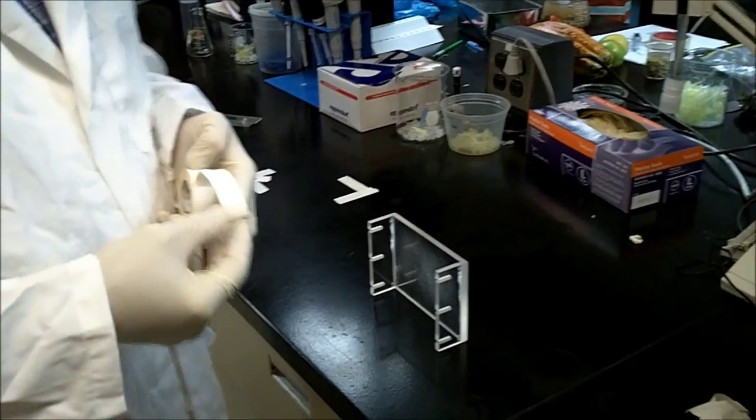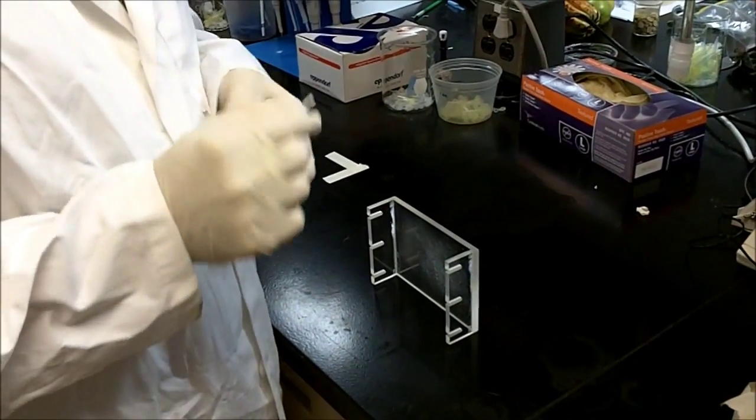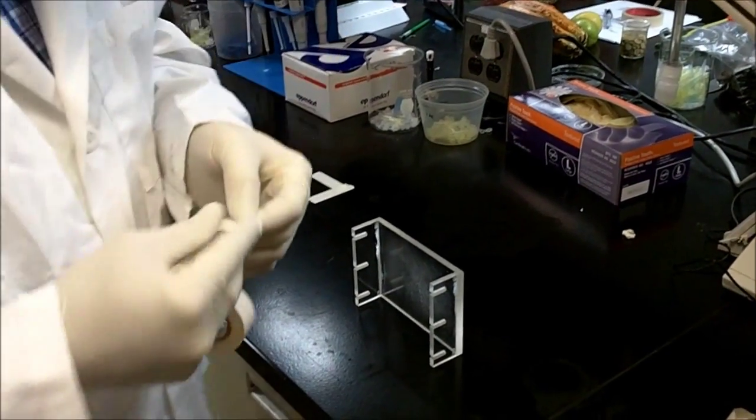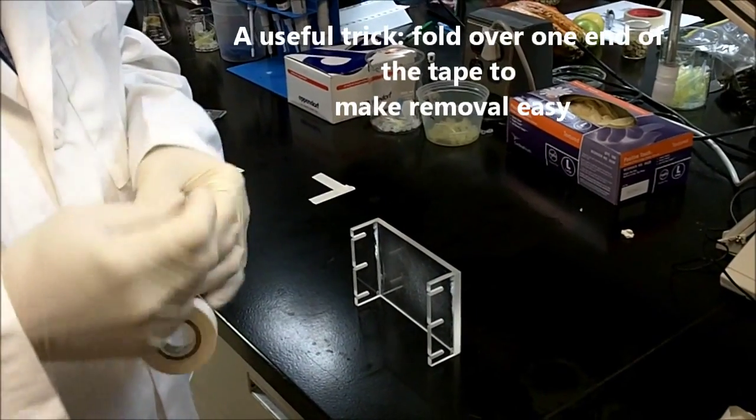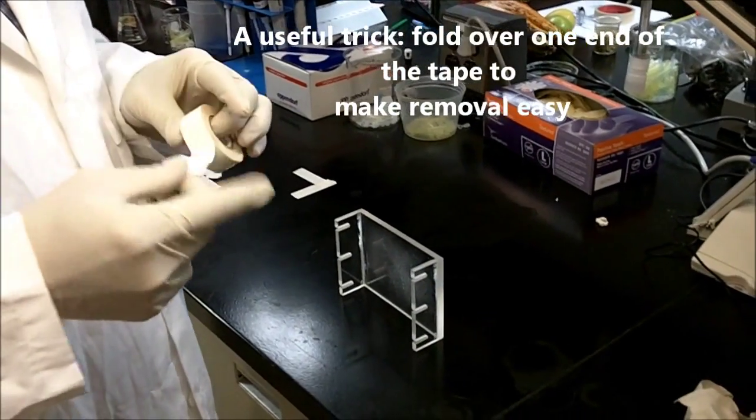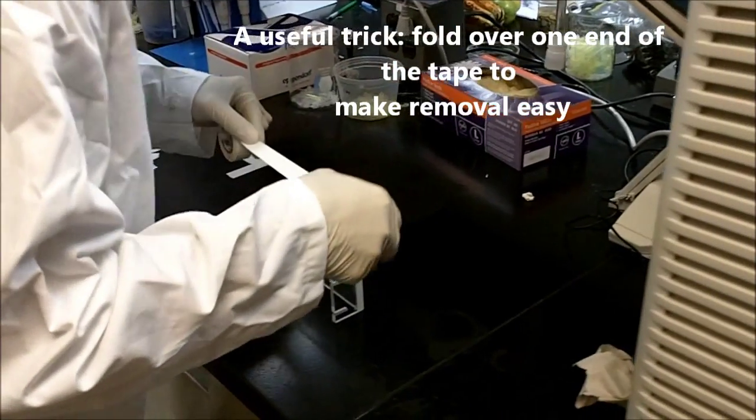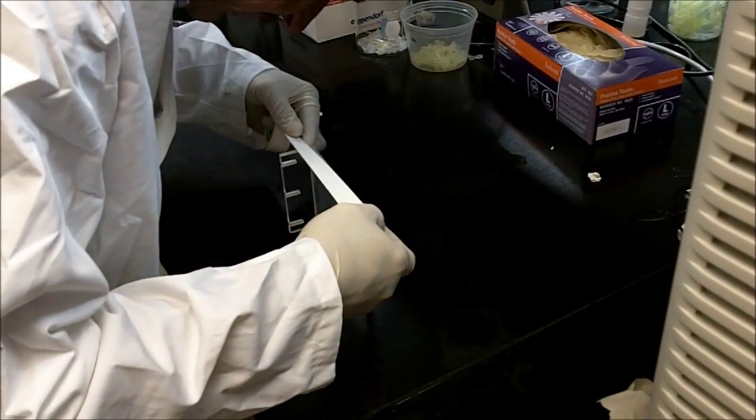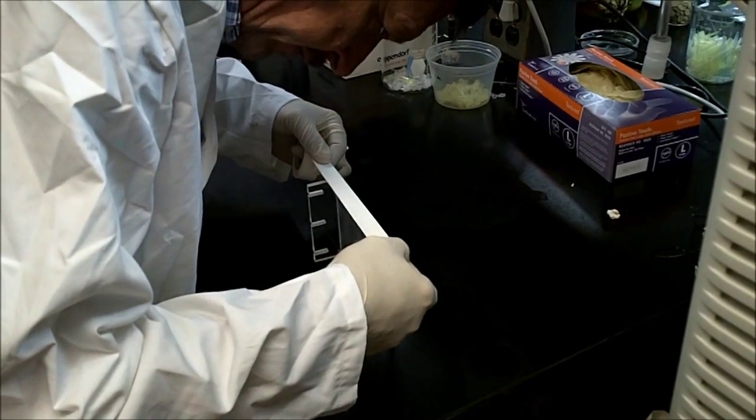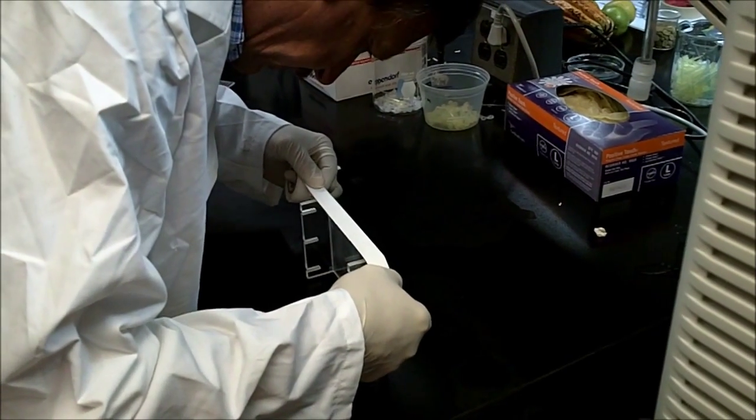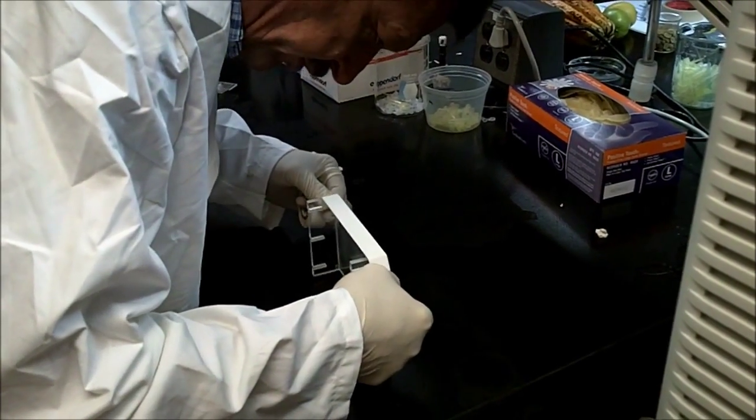The first step is to place your tape on the gel plate. I usually fold up the ends to make the removal of the tape easier. And what you want to do is put the tape very carefully so all the surface is covered.